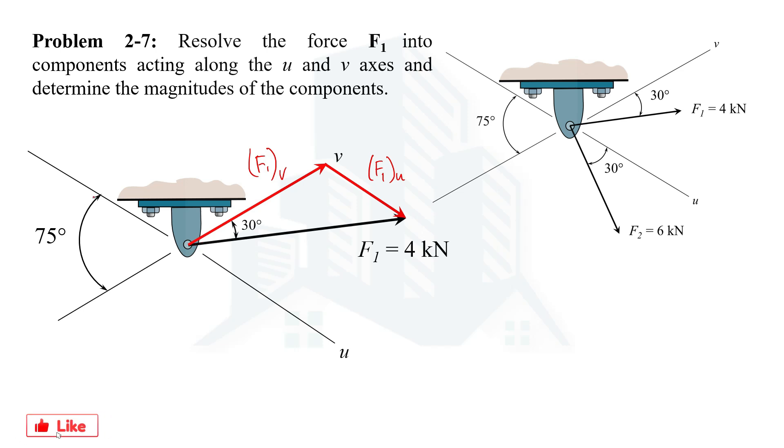If we look here, the total angle between U and V is 75 degrees, so on the other side will also be 75 degrees. If this is 30 degrees, the remaining angle would be 45 degrees. This angle is 45 degrees actually.